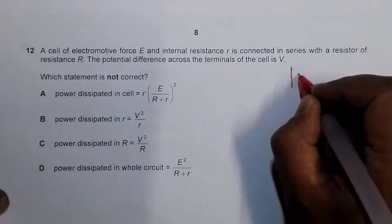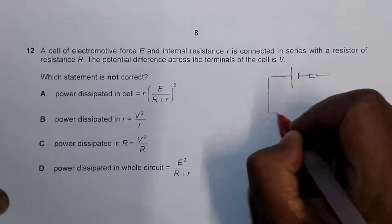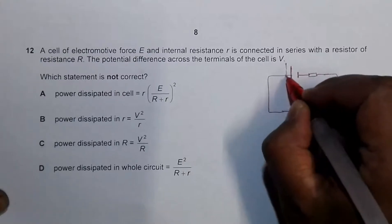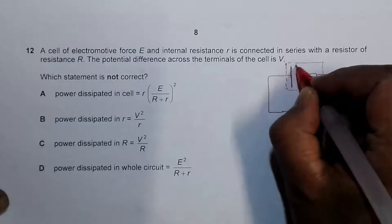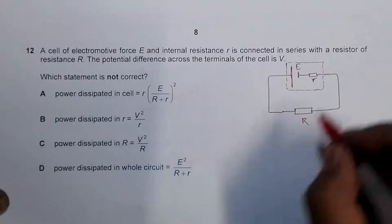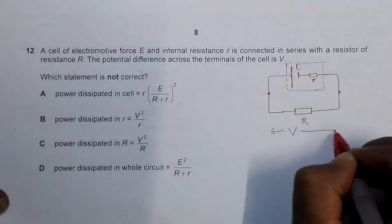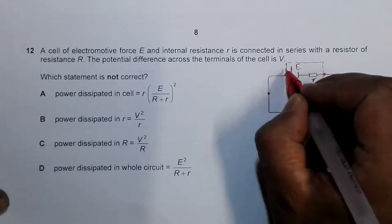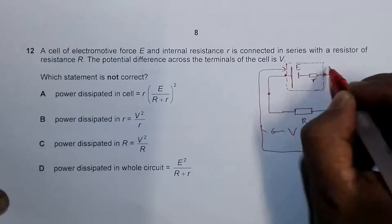If I draw the circuit diagram, it should look something like this. This is the cell with its internal resistance r, and this is the external resistance R. The potential difference across the terminals of the cell is V — so from here to here it is V. From outside the cell, this potential difference is V.